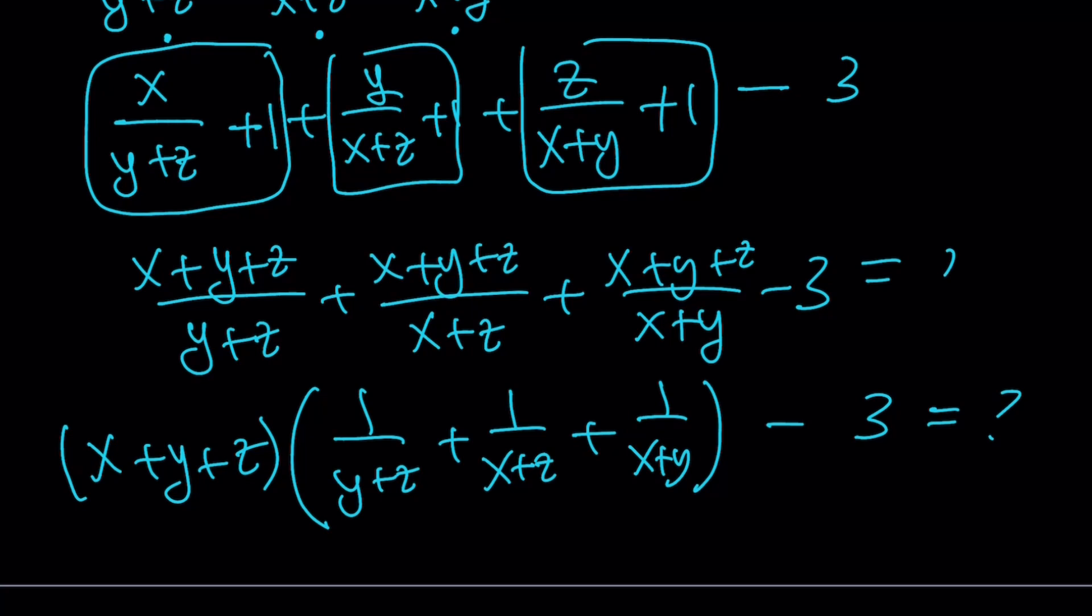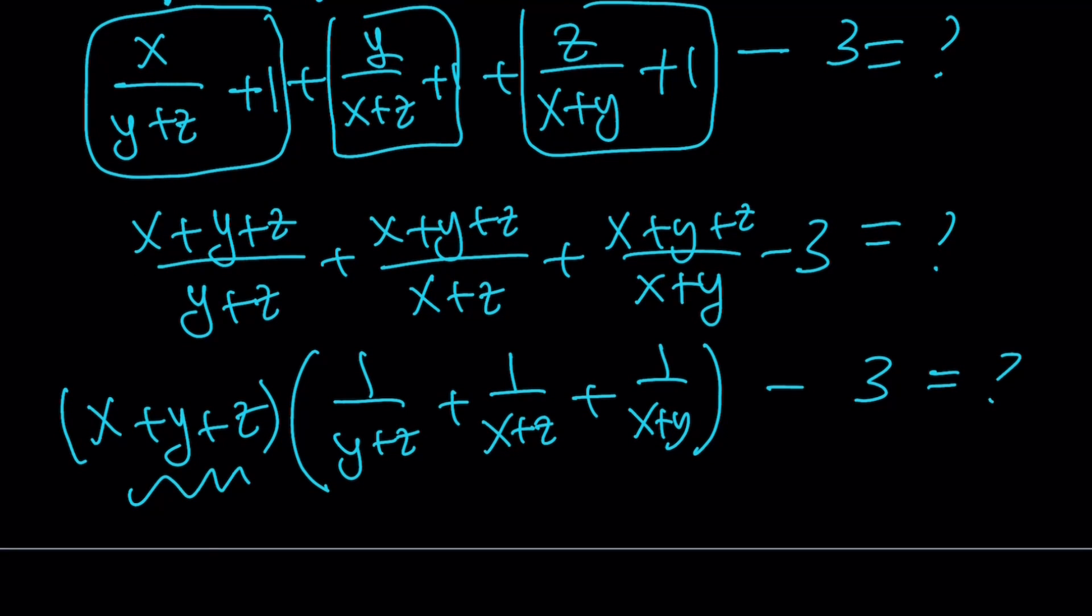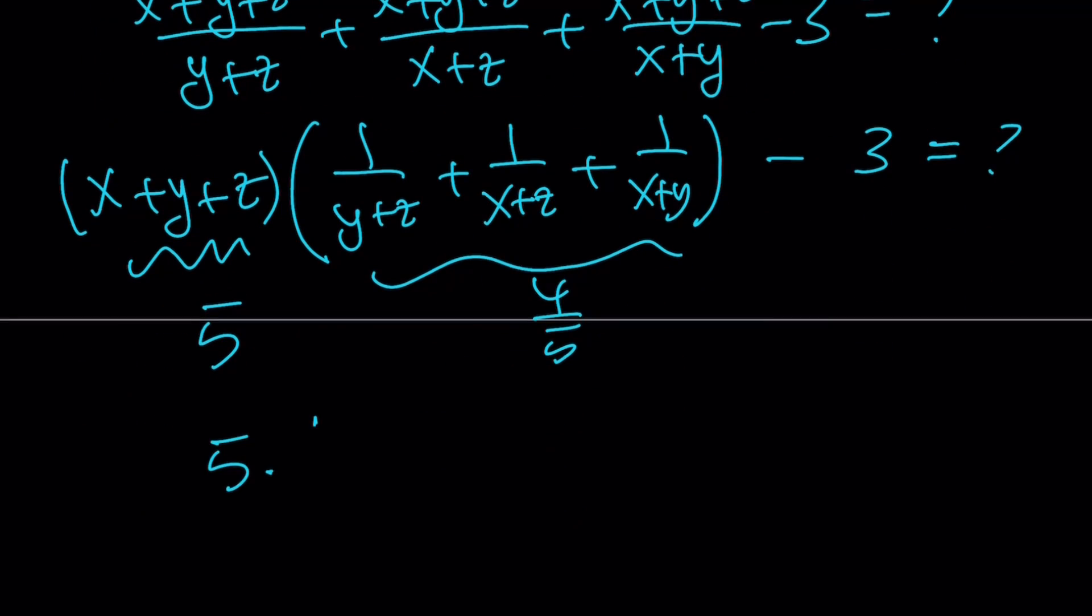I don't know what it is. It's equal to question mark. But what is it equal to? We do know that this is equal to 5, and this is equal to 4 fifths. Therefore, this is 5 times 4 fifths minus 3. The 5s cancel out. 4 minus 3 equals 1. And that is the answer to the expression we're looking for. And this brings us to the end of this video.